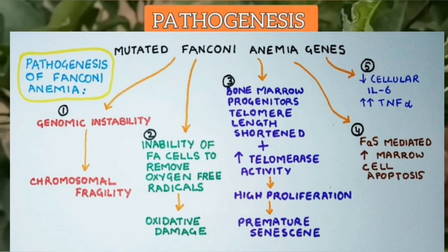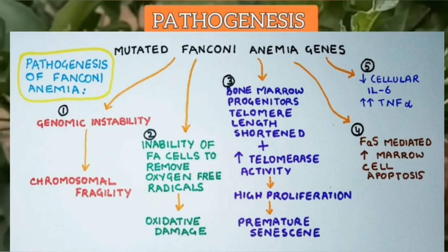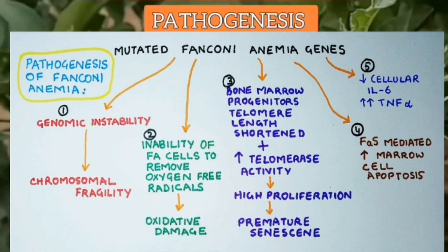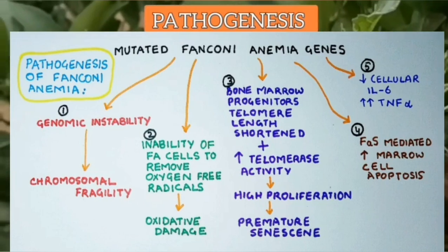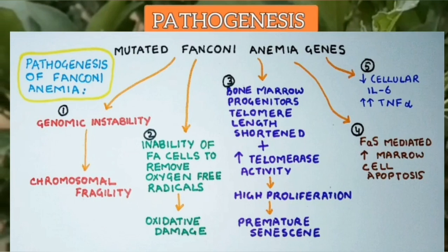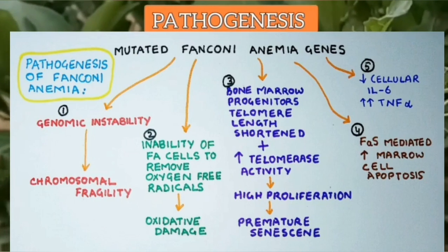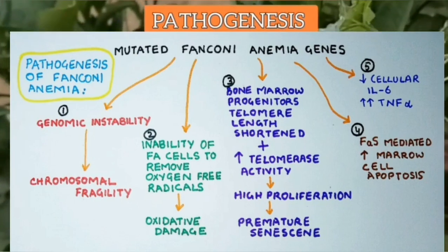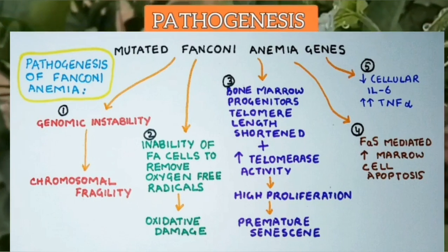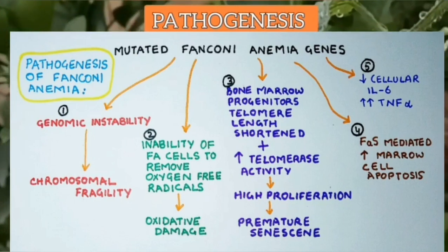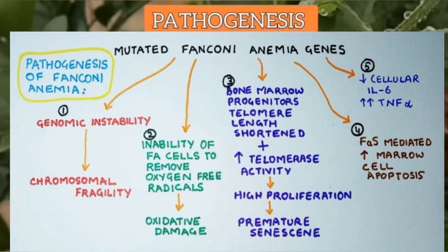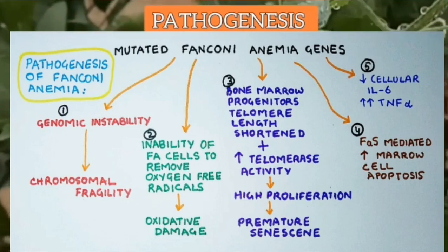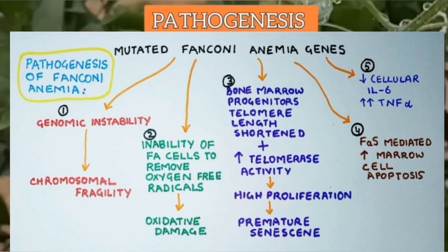Increased bone marrow cell apoptosis occurs, mediated by FAS, which is a membrane glycoprotein receptor containing an integral death domain. A constant finding is diminished cellular interleukin-6 production along with markedly heightened tumor necrosis factor alpha generation in Fanconi Anemia.